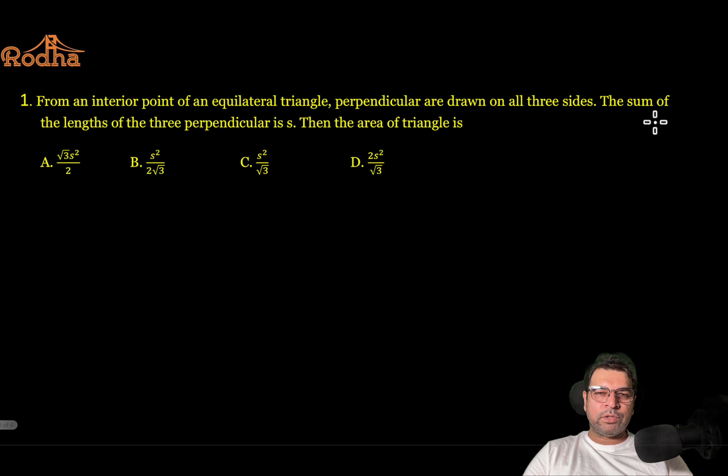Let's start. That's your first question, actual CAT question with actual options. From an interior point of an equilateral triangle, perpendiculars are drawn on all sides. The sum of the lengths of the three perpendiculars is S, then find the area of the triangle in terms of S.